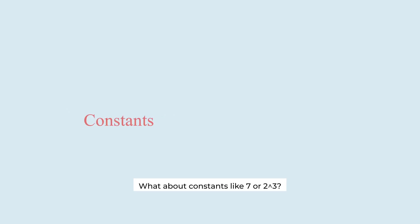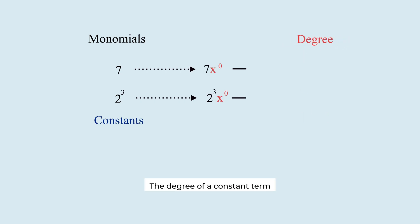What about constants like 7 or 2 cubed? Those are still monomials. So we need to define their degree. In math, any variable to the 0 power equals 1. By this rule, the degree of a constant term is defined as 0. So the exponent here is 3, but the degree is 0.